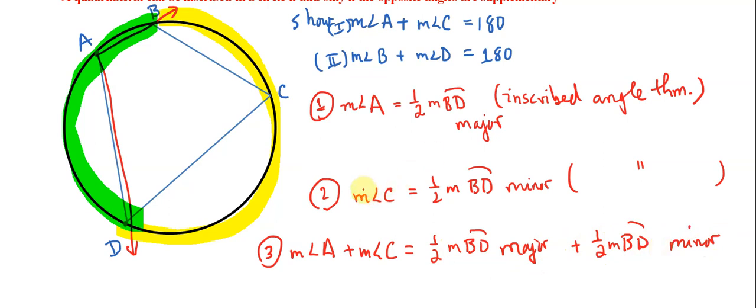And then from here, we've got a one half in both of these terms so we can factor it out: one half times the quantity BD major plus the measure of BD minor.